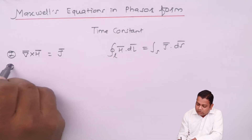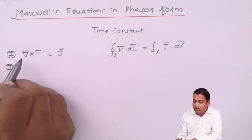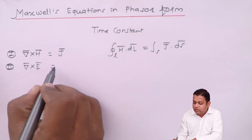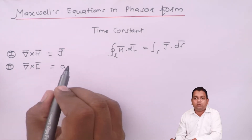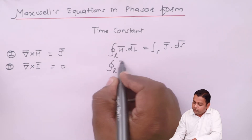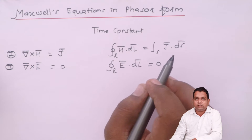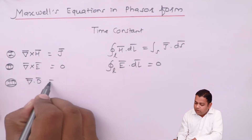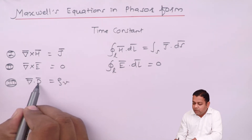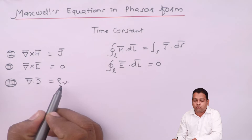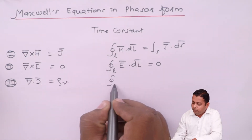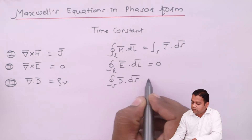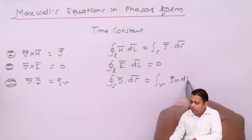The first equation comes from Ampere's Circuital Law, representing the rotation of the magnetic field. For the second equation, we find the curl of the electric field intensity has no rotation, so the result equals zero. In integral form, the closed line integral of Ē·dL̄ equals zero. The third equation is Del·D̄ = ρᵥ — the divergence of electric flux density equals volume charge density in C/m³. In integral form, the closed surface integral of D̄·dS̄ equals the volume integral of ρᵥ dV.